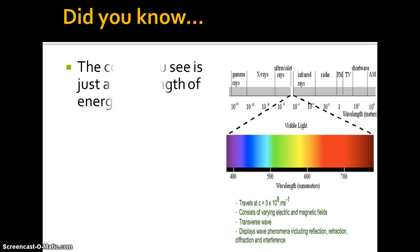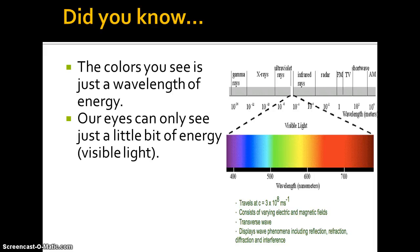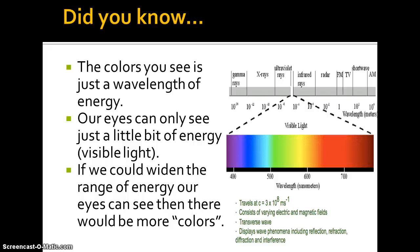Did you know the colors you see is just a wavelength of energy? Our eyes are very sensitive. They can only see a small amount of energy, and that energy you see is called visible light. If somehow we could change our eyes and we could see a wider range of energy, then we would actually have more colors that we see. Imagine if it was just a little bit wider of a range and then we could see some of the UV rays and the infrared rays. Pretty cool, huh?